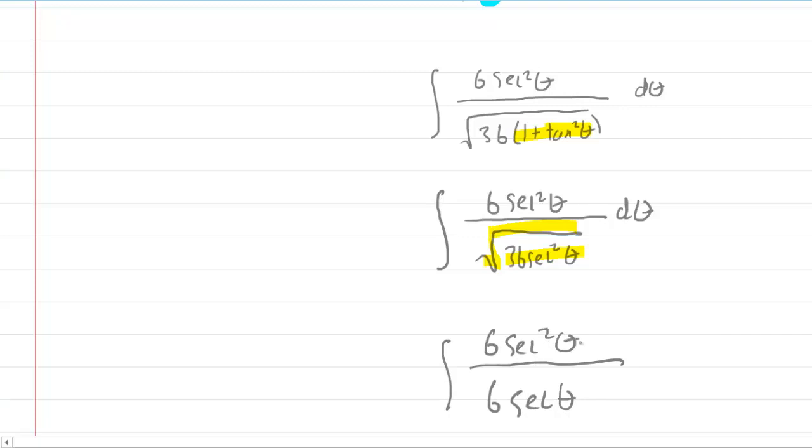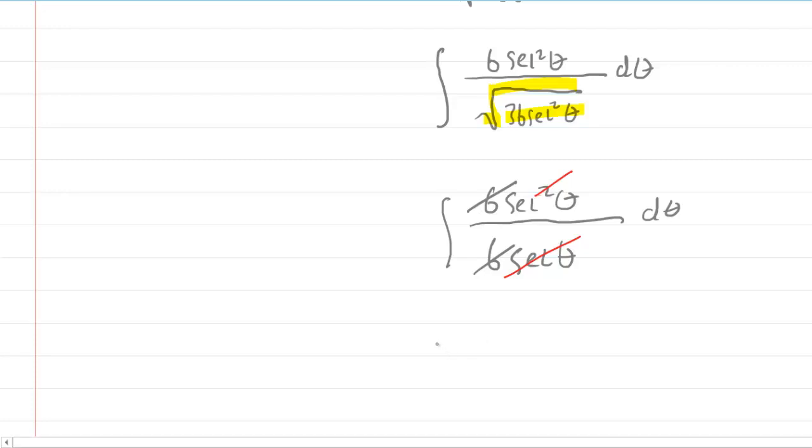Now, we seem to be getting somewhere here because now these 6s cancel. And then you can cancel a factor of secant. You can cancel one of the factors in the denominator, one of the factors in the numerator. That leaves you with just secant theta in the numerator. So finally, we have a pretty simple integral of secant of theta d theta.